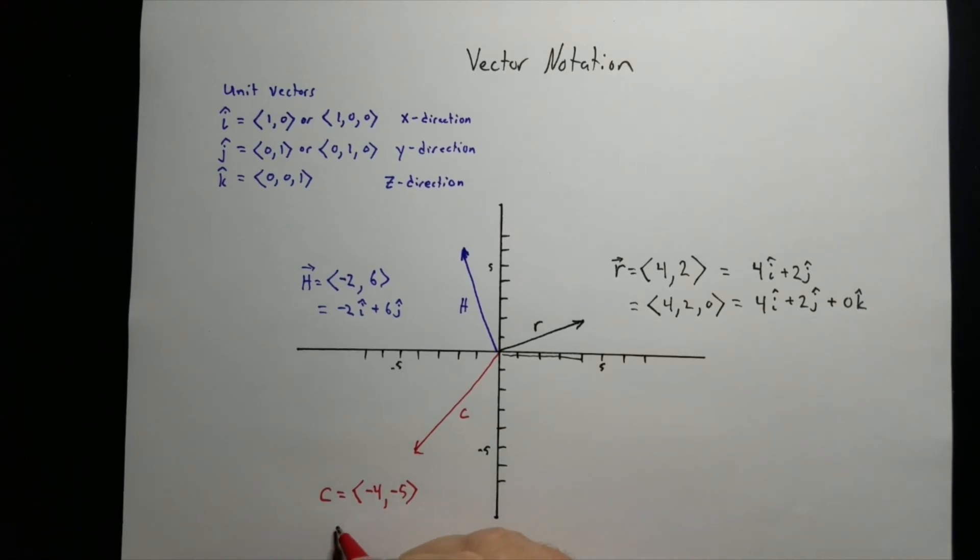Or you can write it as 4i plus negative, well, actually minus 5j.